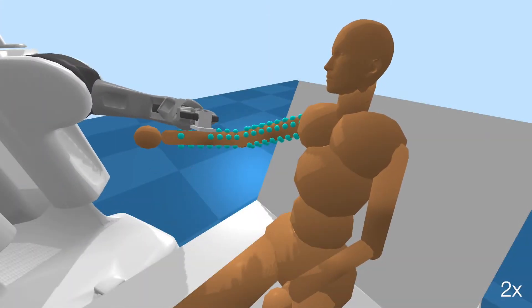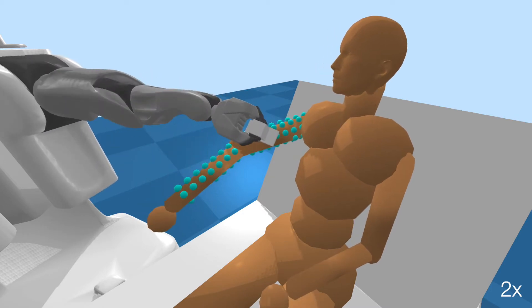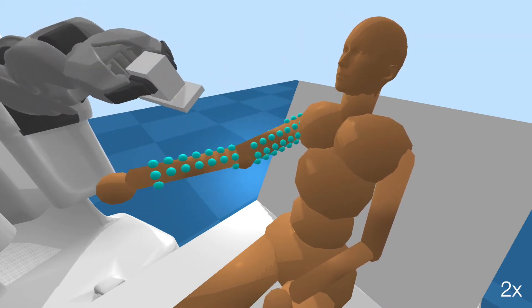The simulated human model in VR has 20 controllable joints, including two 7-degree-of-freedom arms and a 3-degree-of-freedom head and waist.